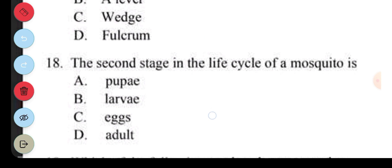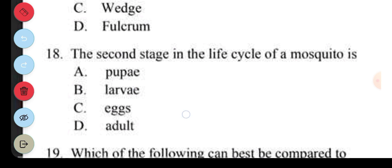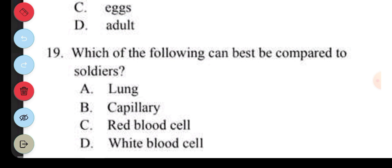Question 18. The second stage in the life cycle of a mosquito is: A. Pupa. B. Larva. C. Egg. D. Adult. The answer to question 18 is B, larva. Question 19. Which of the following can best be compared to soldiers? A. Lung. B. Capillary. C. Red blood cell. D. White blood cell. The answer to question 19 is D, white blood cell.